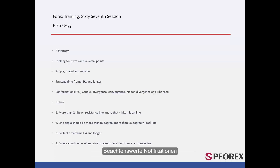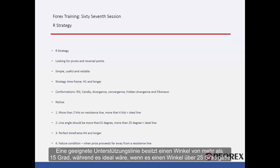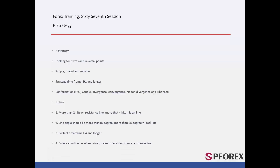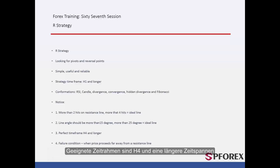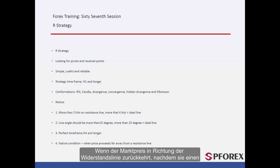Remarkable Notifications: A trader must consider the following aspects. Market price must touch the support line at least twice. A support line with more than 4 hits is an ideal support line. A suitable support line has an angle greater than 15 degrees, while it would be ideal if the angle was over 25 degrees. Appropriate timeframes are H4 and longer. If the market price returns considerably towards the resistance line after crossing it, then the R strategy would become ineffective.